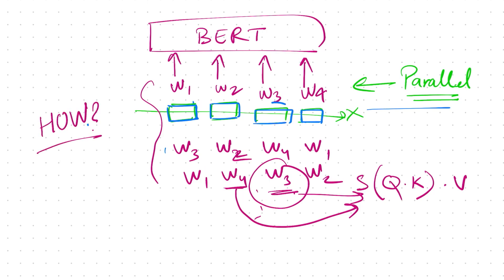The only question left is how do you generate these positional encodings. It's an active area of research and people are coming up with interesting ways of representing these encodings, with the classic one being the combination of sine and cosine. That's out of scope for this video — I'll put some papers on positional encodings in the description, make sure to check them out. If you enjoyed this content, hit the like button, subscribe to the channel, and share it with friends who might be interested. See you in the next one, bye!